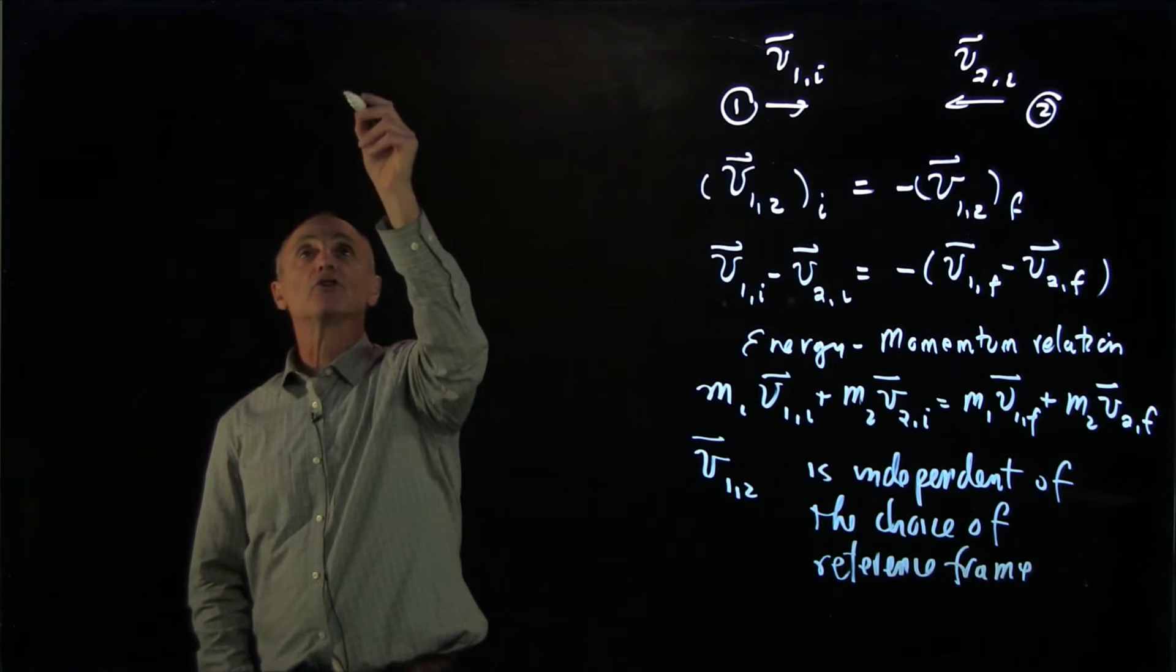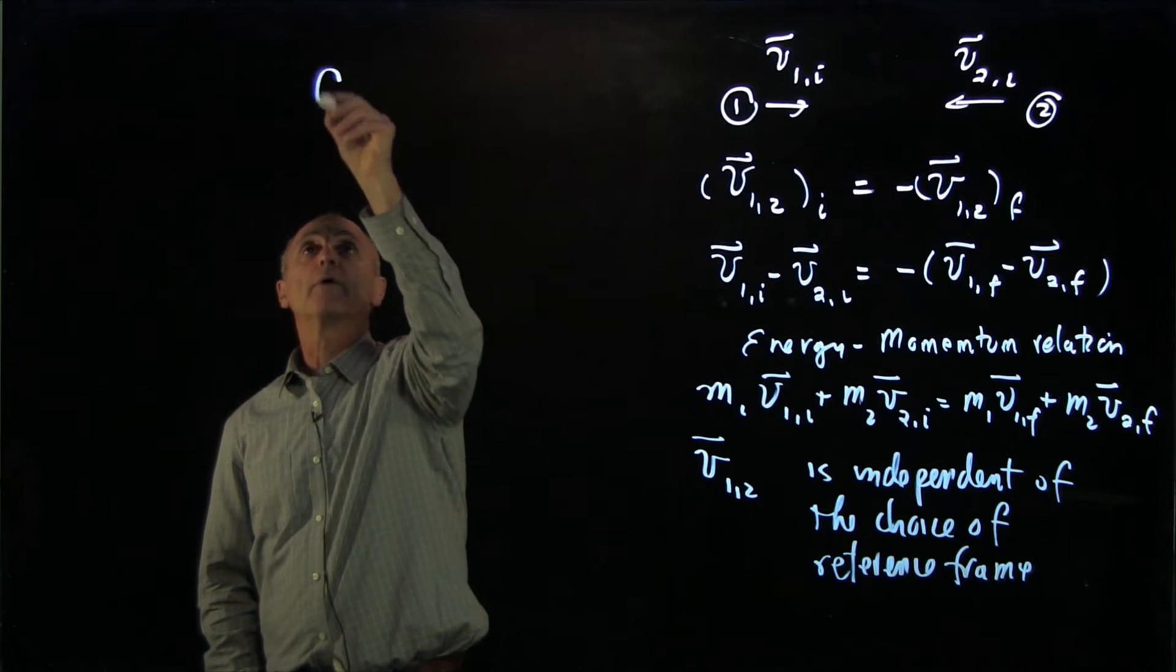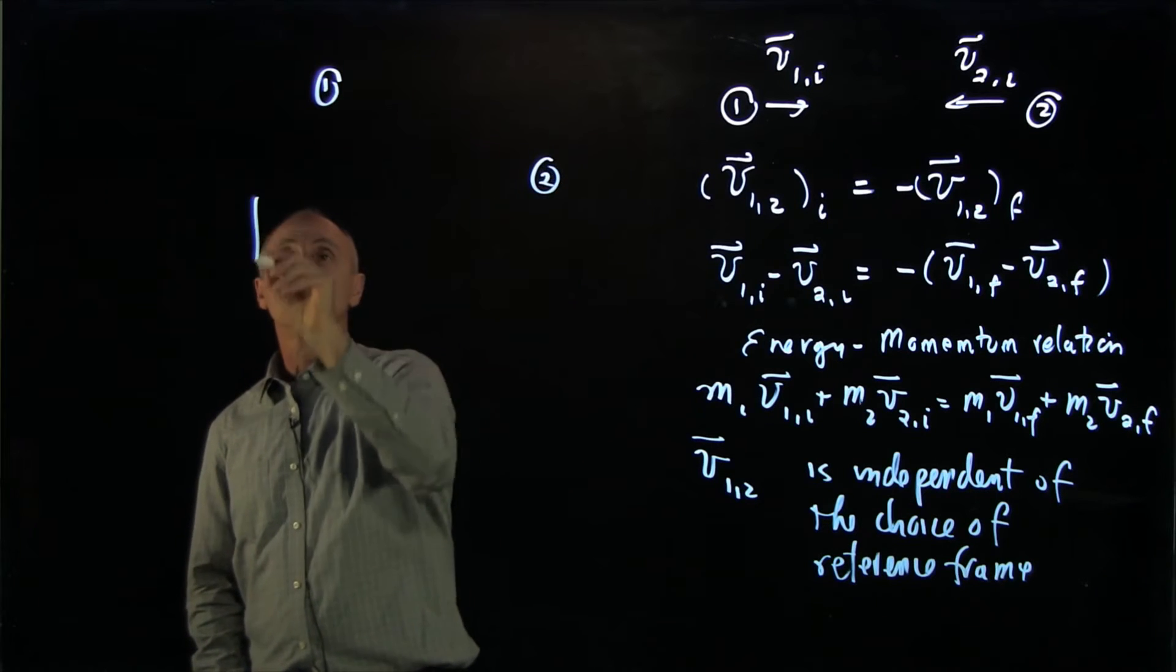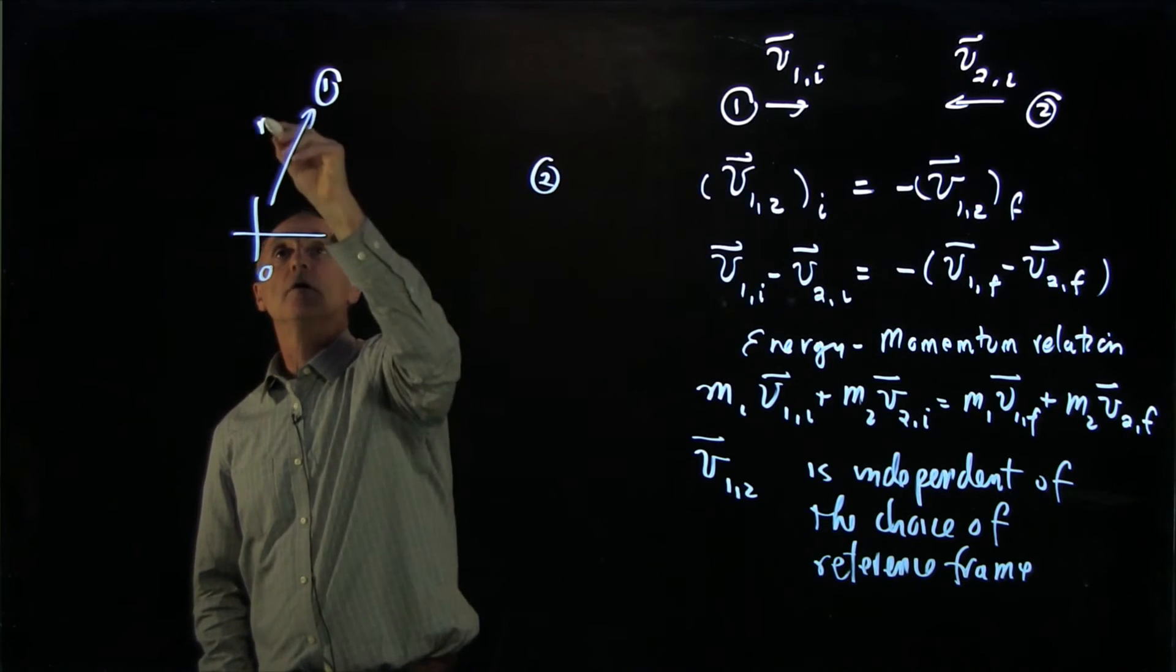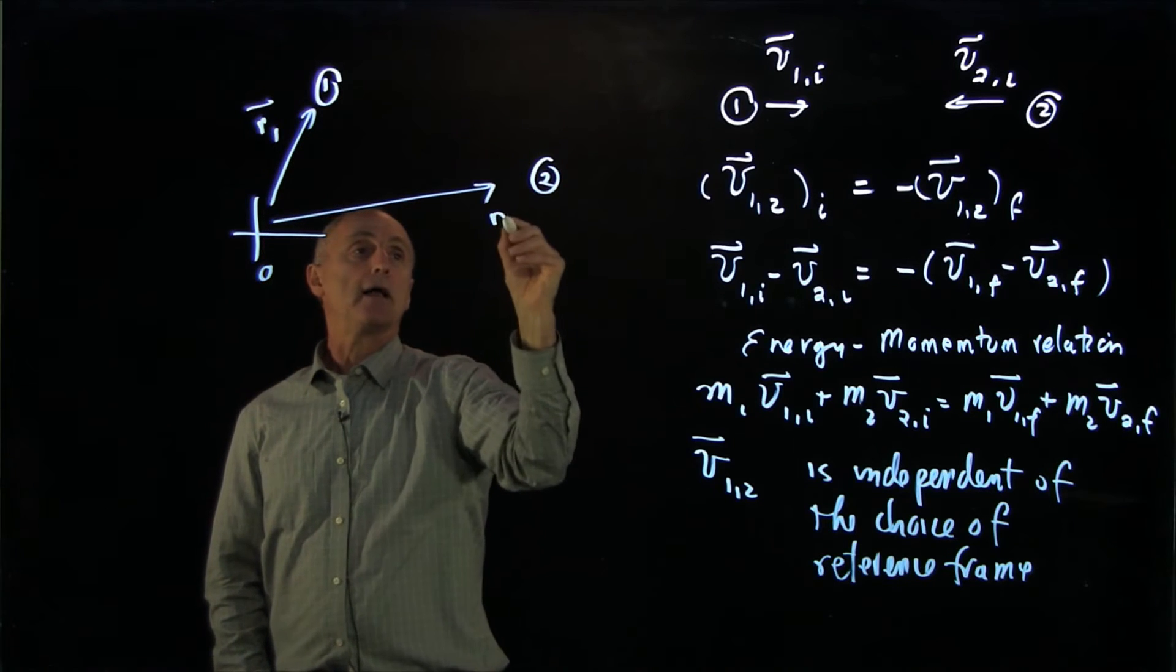So now let's look at that. So again, let's imagine that we have two particles, where we have particle 1 and particle 2. We have some origin, r1 and r2.